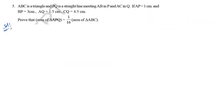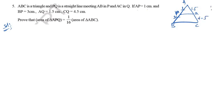Fifth question: In triangle ABC, a line meets AB at P and AC at Q, where AP = 1 cm, BP = 3 cm, and AQ = 1.5 cm, CQ = 4.5 cm. Prove that area of triangle APQ = (1/16) × area of triangle ABC.